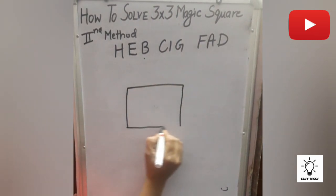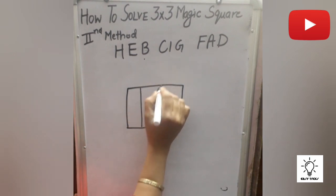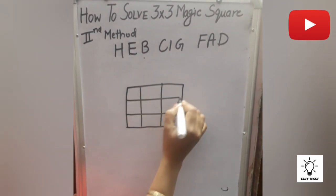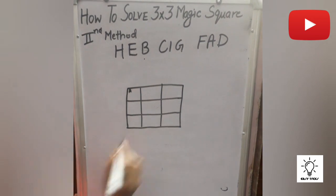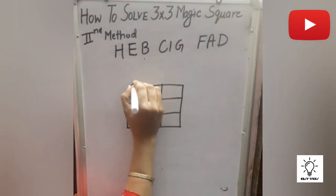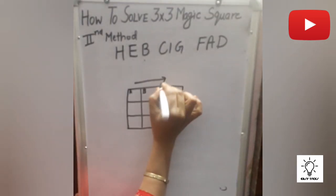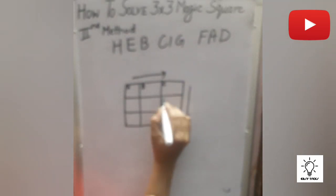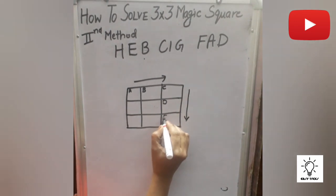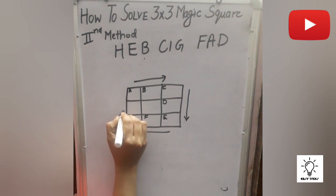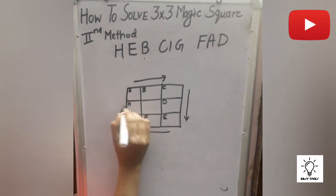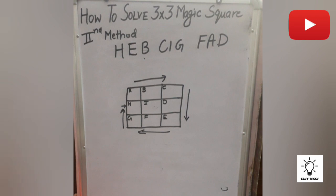First we draw the magic square and write the alphabets in alphabetical order. In the first box we write A, then B and C in that direction, then continuing: D, E, F, G, H, and I. I is the last one.